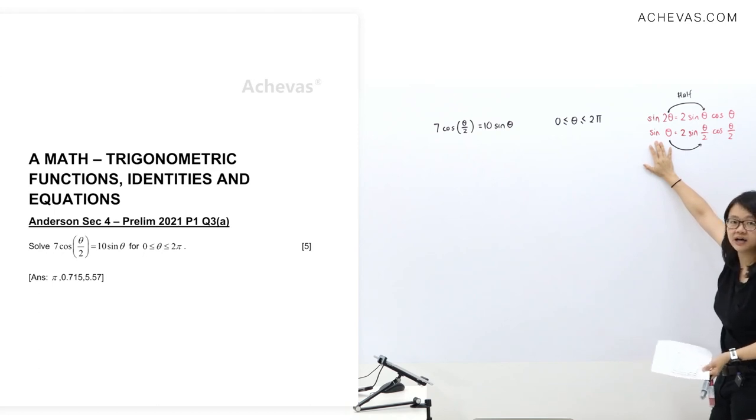It can be 3 theta, 4 theta, 5 theta, even weird things like 7.6 theta. Just saying. So we're going to apply this one to that question over there.